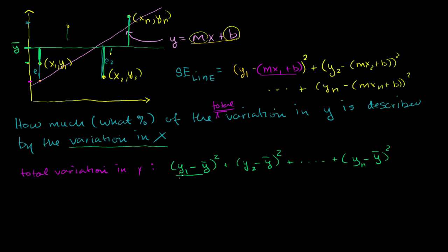So what we want is: what percentage of the total variation in y is described by the variation in x? Our denominator will be the total variation in y — let me call this the squared error from the mean of y. That is really the total variation in y. So let's put that as the denominator: the total variation in y, which is the squared error from the mean of the y's. Now we want to know what percentage of this is described by the variation in x.